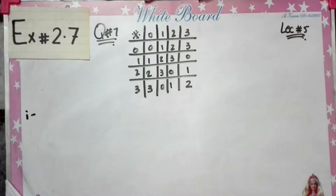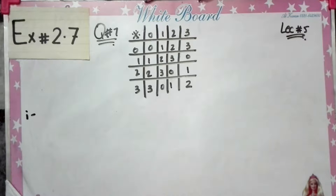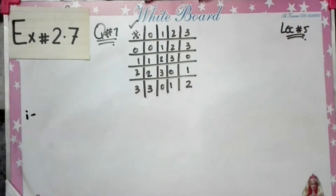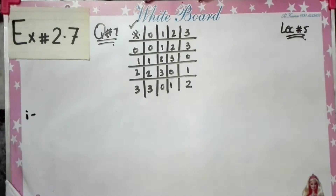So first of all, let's see what the statement of question number 7 is. Question number 7 is: What operation is represented by the adjoining table? Now for the binary operation there is a star, but we do not know if this is addition or multiplication, so we will determine which operation is performed here.